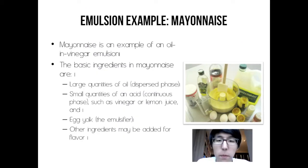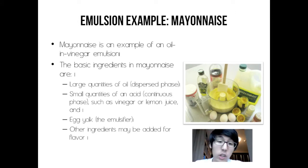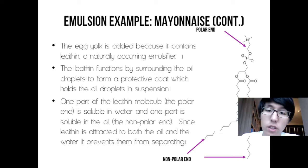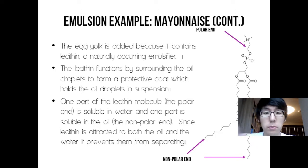Emulsion example: Mayonnaise. Mayonnaise is an example of an oil and vinegar emulsion. The basic ingredients are large quantities of oil, small quantities of an acid like vinegar or lemon juice, and egg yolk — the emulsifier. Other ingredients may be added for flavor. The egg yolk is added because it contains lecithin, a naturally occurring emulsifier. The lecithin functions by surrounding the oil droplets to form a protective coat which holds the oil droplets in suspension.